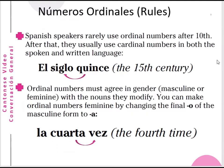Now the rules of using the números ordinales. Spanish speakers rarely use ordinal numbers after ten. When the number is above ten, we use the cardinal number to represent the ordinal number — in both spoken and written language. For example, 'the 15th century' is 'el siglo quince.' The adjective comes after the noun — we say siglo first, then quince. Literally it is 'the century 15,' meaning the 15th century.